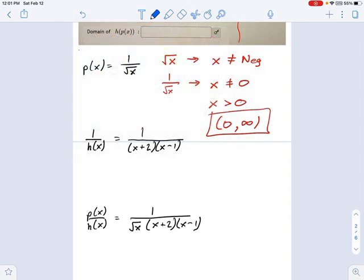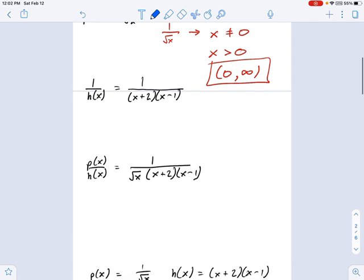Next example, which is one over h. With this one, it should be familiar from our unit on rationals. What are the things we can't do? I don't have to worry about square roots, but I still can't divide by zero.